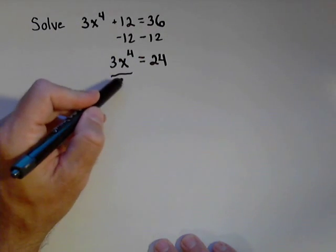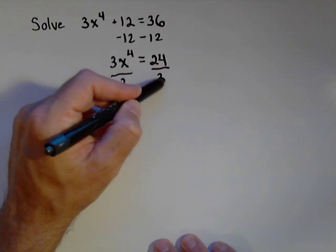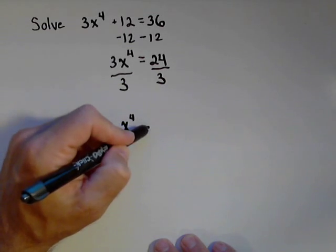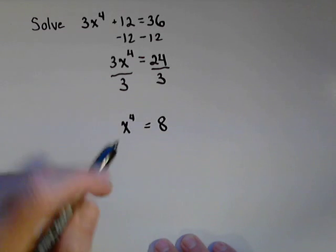Next step, we'll divide both sides by 3. And we get x to the fourth equals 8.